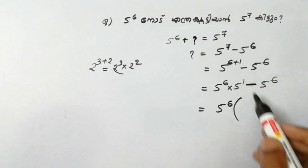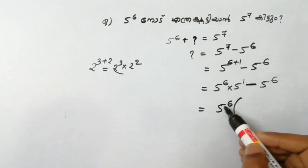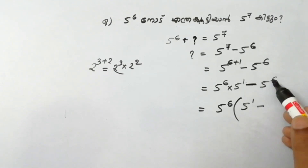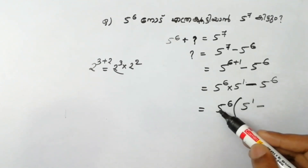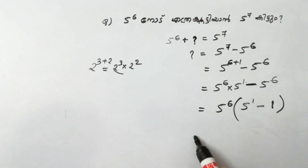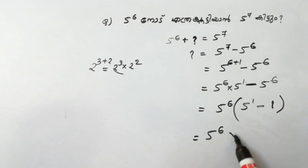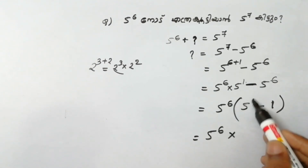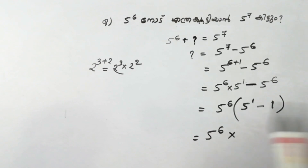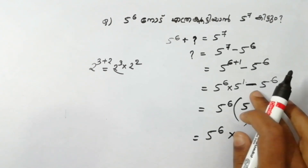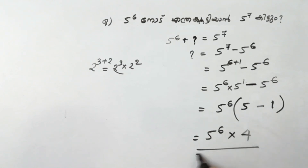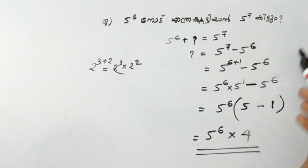5 raised to 6 is the common factor. Taking 5 raised to 6 common: 5 raised to 1 minus 1. If you put 5 raised to 1, that equals 5. If you put 4, then you get 4, times 5 raised to 6. So 5 raised to 6 into 4 gives the final answer.